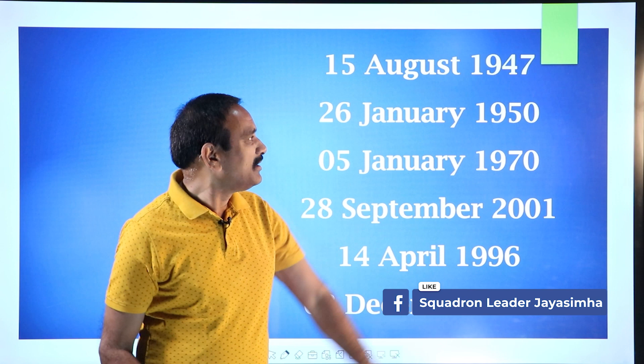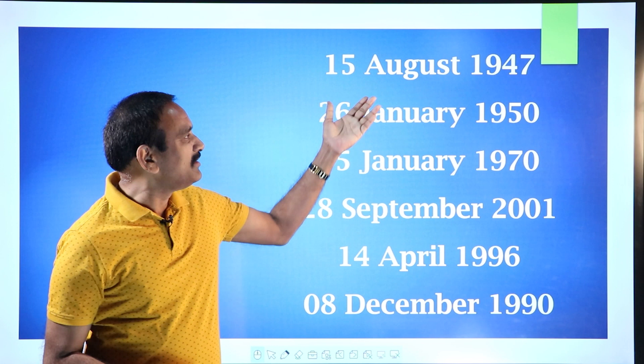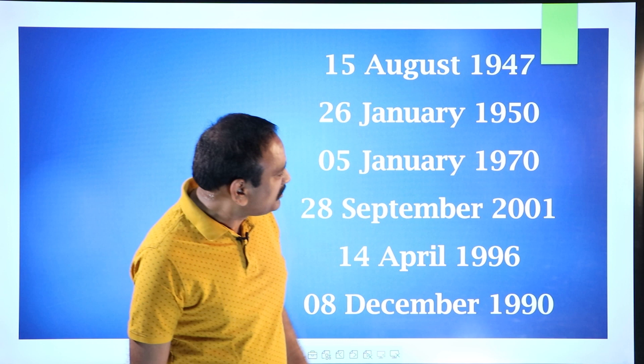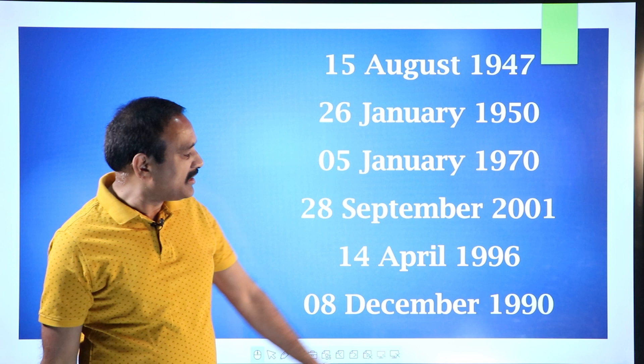For example, look at this. 15th August 1947 — India became independent. Which day? Friday. 26th January 1950 — India became Republic. Thursday. 5th January 1970 — Monday. 28th September 2001 — Friday. 14th April 1996 — Sunday. 8th December 1990 — Saturday.